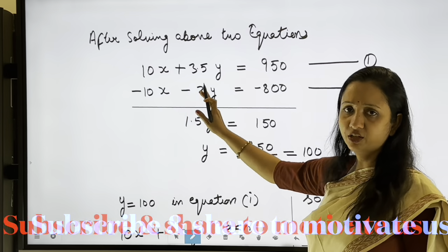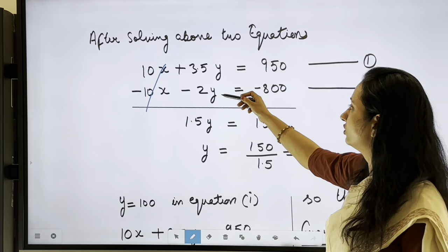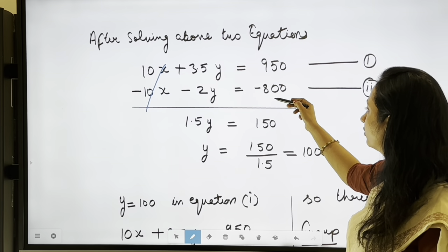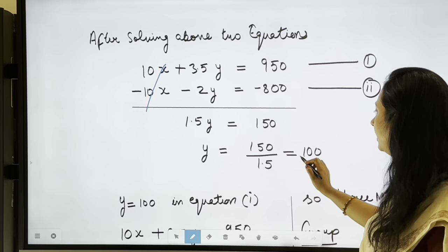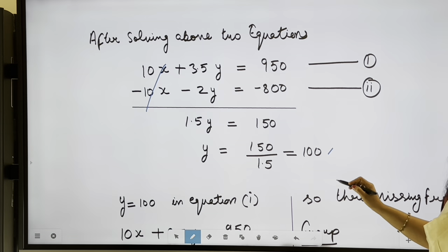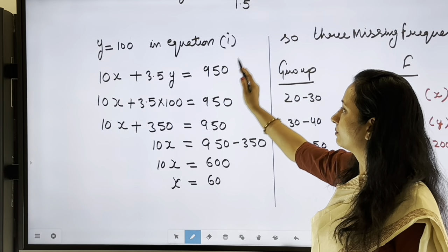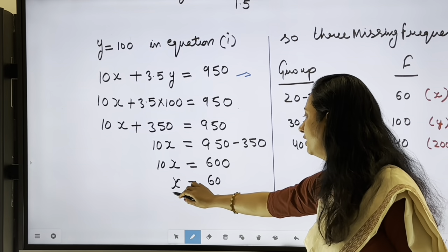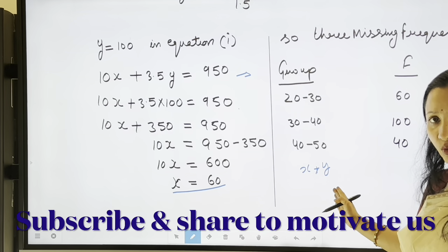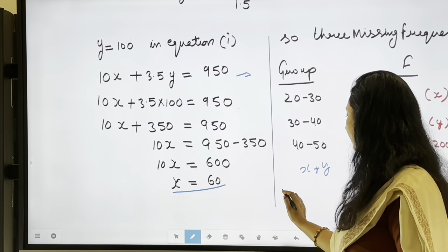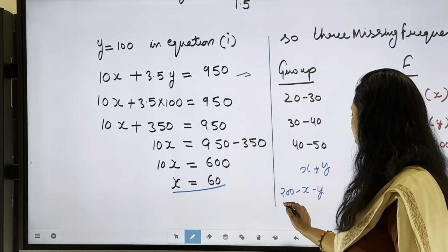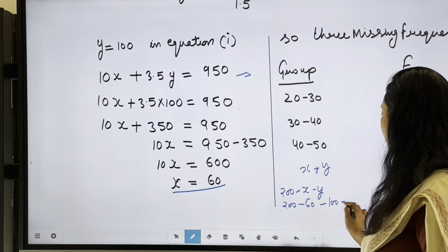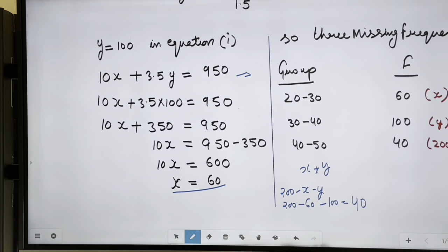Solving the two equations simultaneously — since x cancels due to opposite signs — we get 1.5y = 150, so y = 100. Substituting y = 100 into Equation 1 to find x: x = 60. Now the third missing frequency = 200 minus x minus y = 200 minus 60 minus 100 = 40.